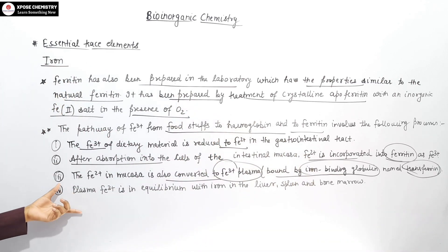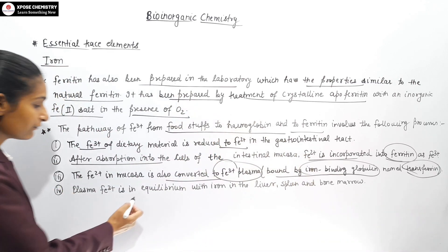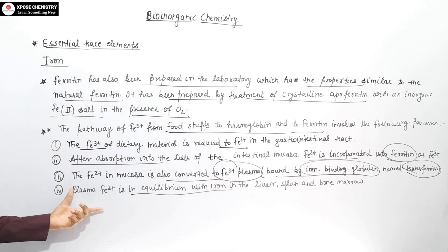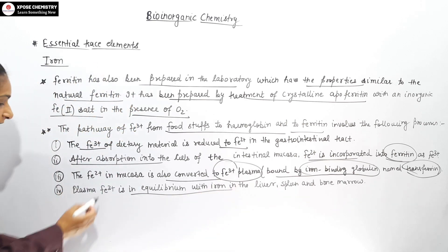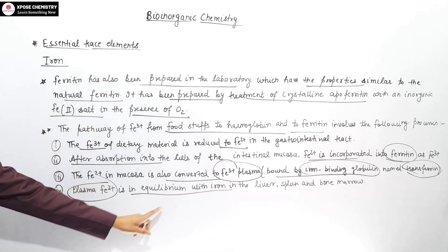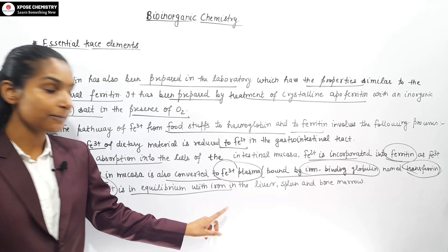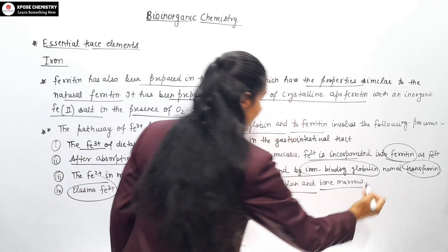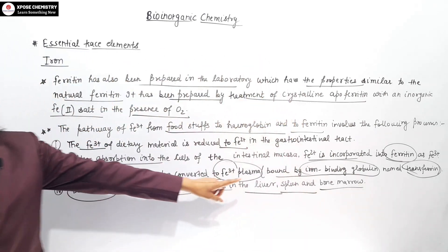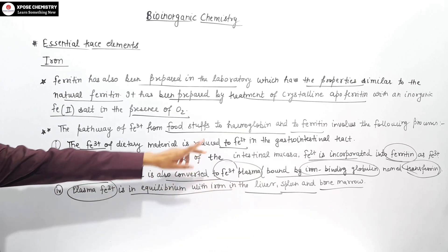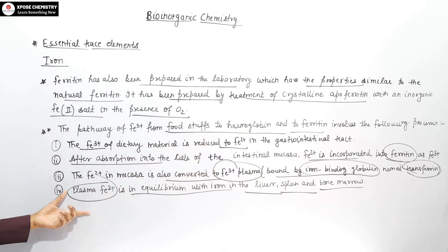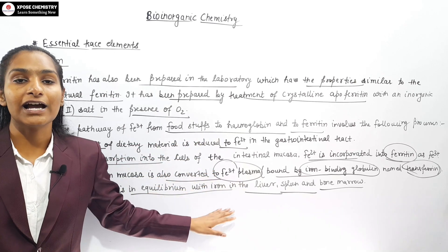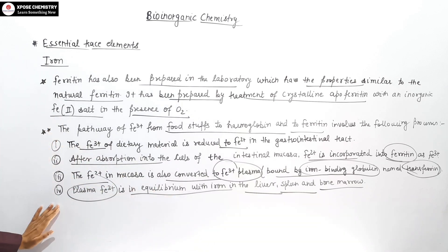The pathway of iron from food to hemoglobin and ferritin involves: dietary Fe³⁺ is reduced to Fe²⁺ in the gastrointestinal tract; after absorption by intestinal mucosa, it is incorporated into ferritin as Fe³⁺; Fe²⁺ is converted to Fe³⁺ and bound by iron-binding globulin, known as transferrin. The plasma Fe³⁺ is then in equilibrium with iron in the liver, spleen and bone marrow.